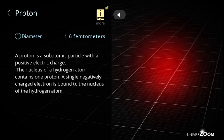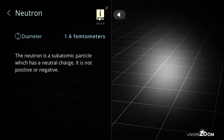Proton diameter: 1.6 femtometers. A proton is a subatomic particle with a positive electric charge. The nucleus of a hydrogen atom contains one proton. A single negatively charged electron is bound to the nucleus of the hydrogen atom. Neutron diameter: 1.6 femtometers. The neutron is a subatomic particle which has a neutral charge. It is not positive or negative.